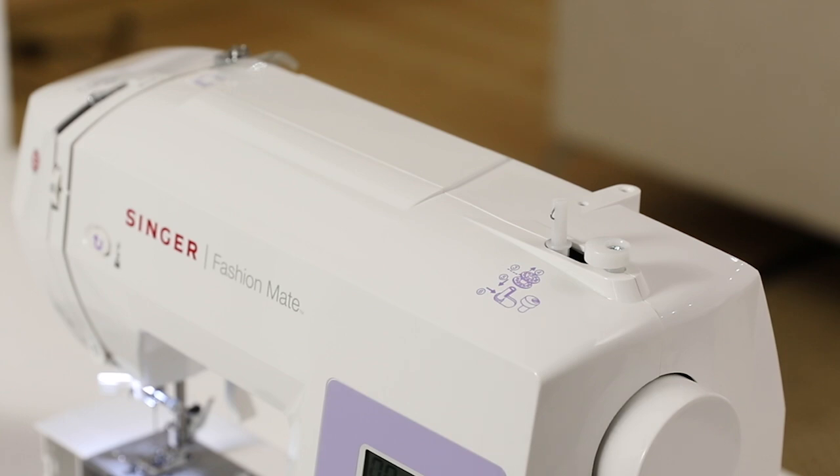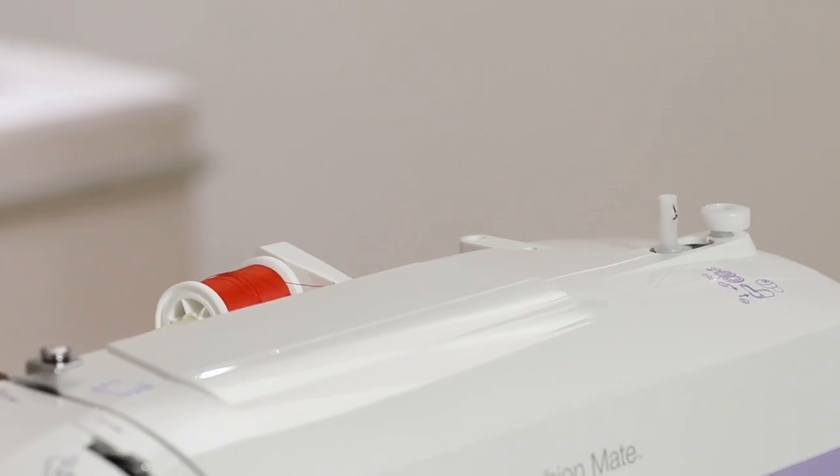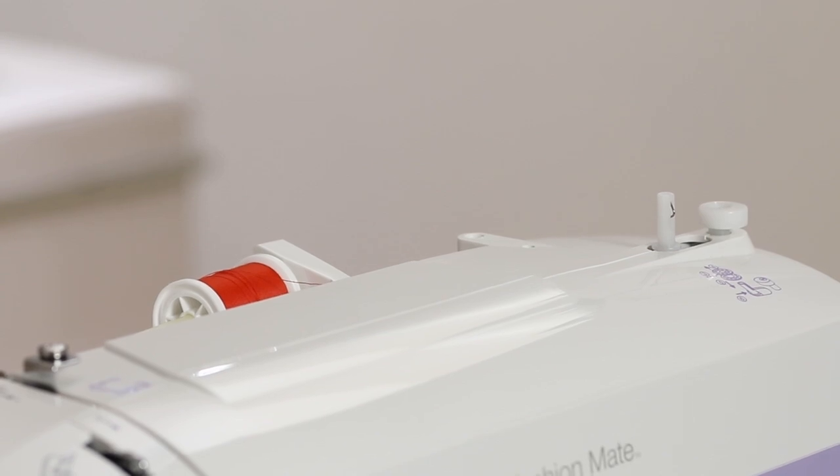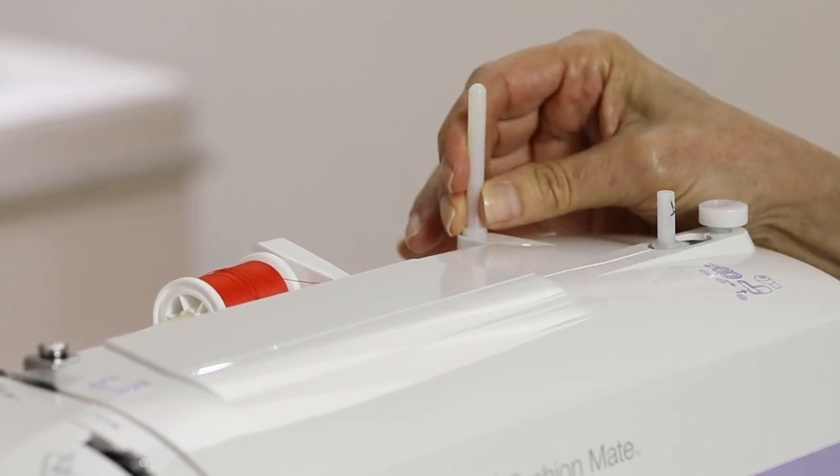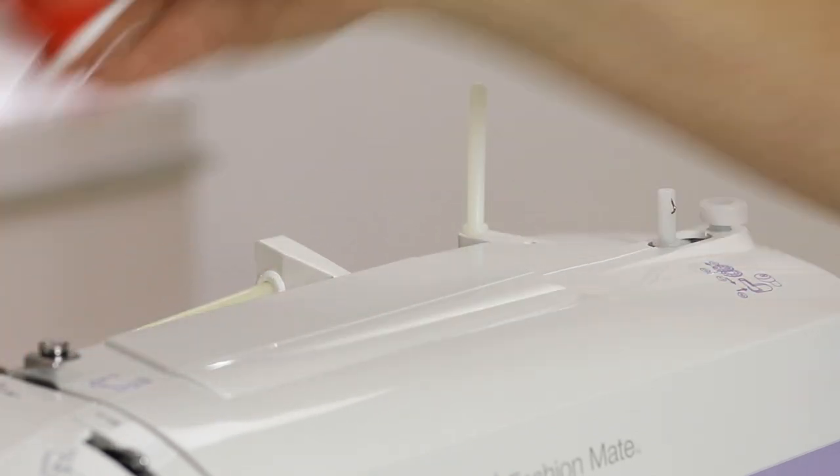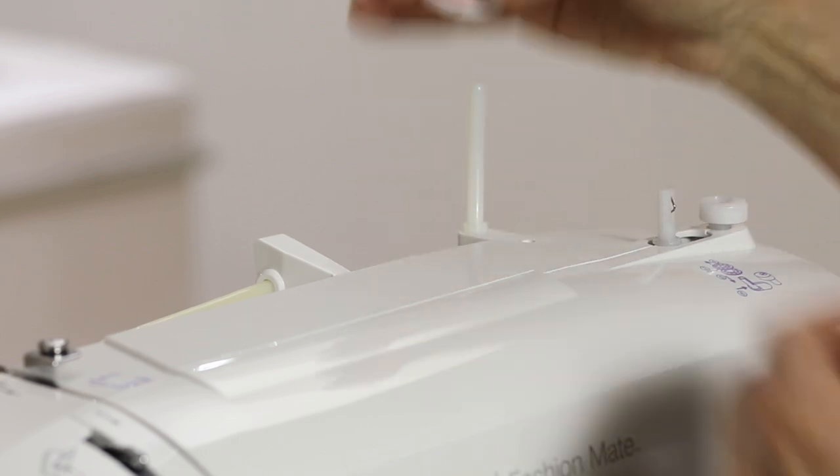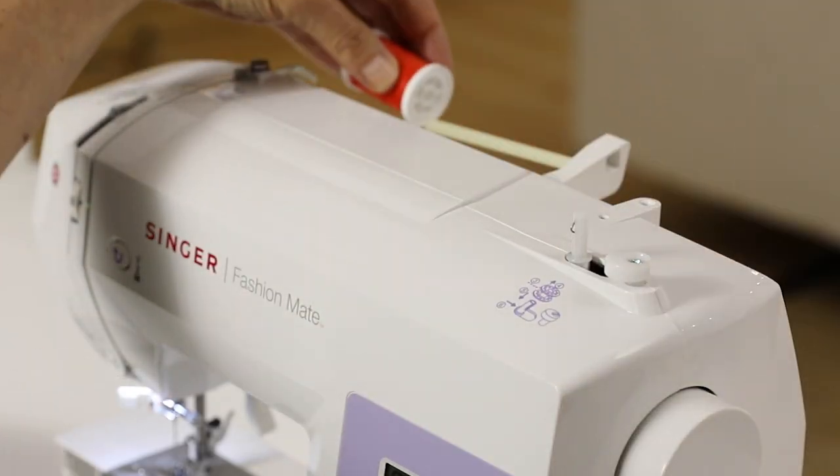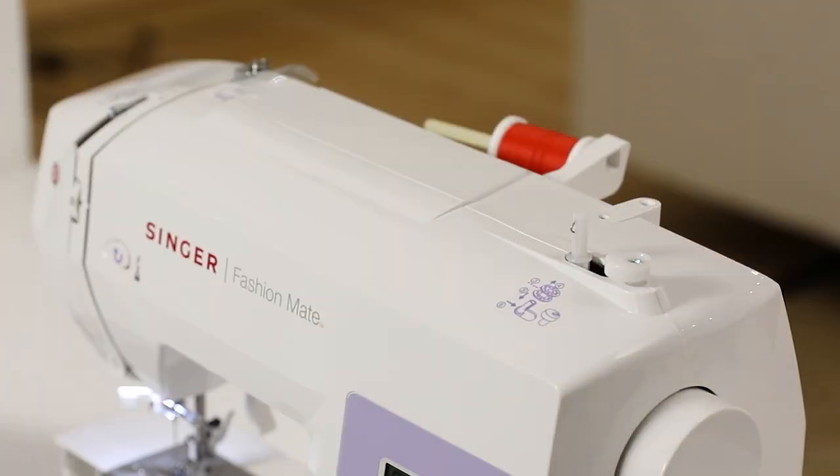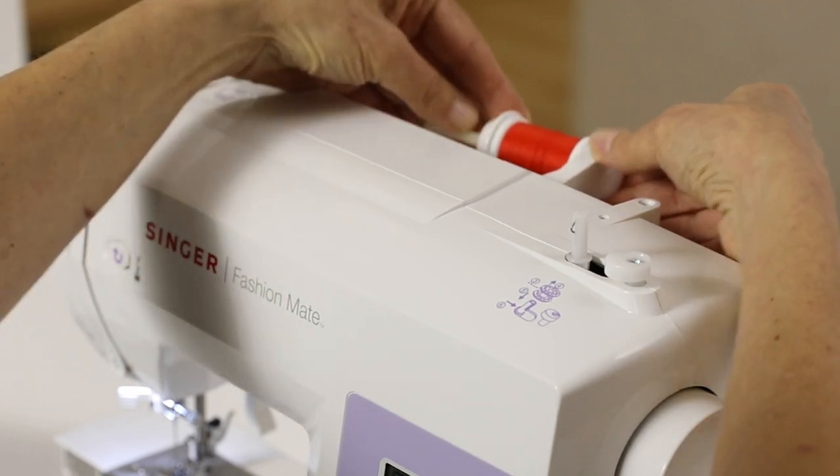Now let's place the thread on top of the machine. To do that we're going to raise the spool pin and set the spool on the spool pin. If you prefer to use your thread in a vertical position you can use your auxiliary spool pin which is located in your removable storage compartment. For now I'm going to use it horizontally so I'm going to place my thread on the spool pin and place the spool cap on to hold the spool securely in place.